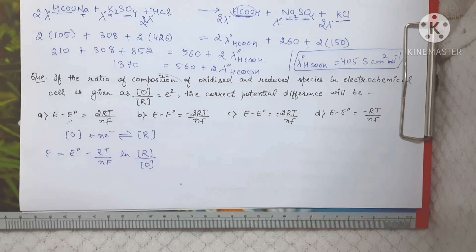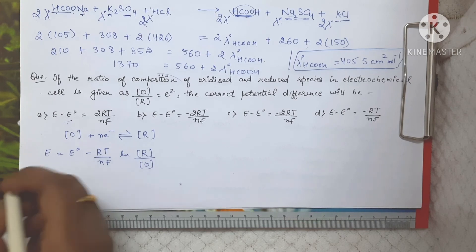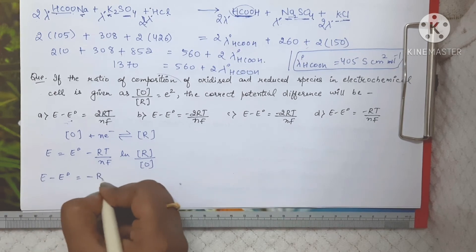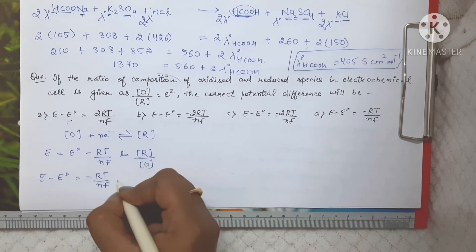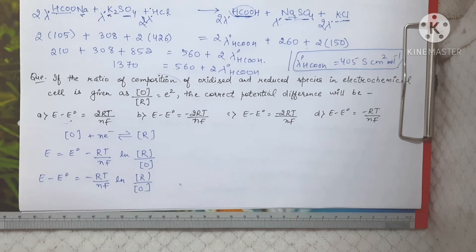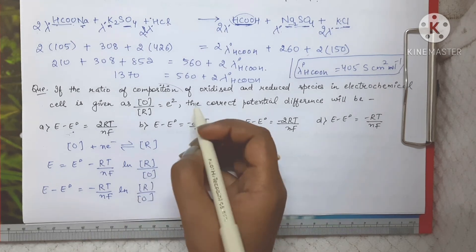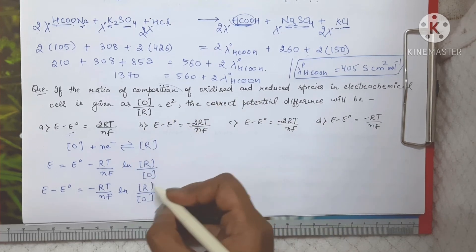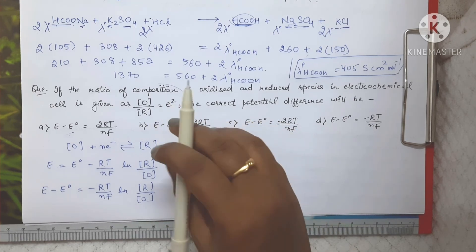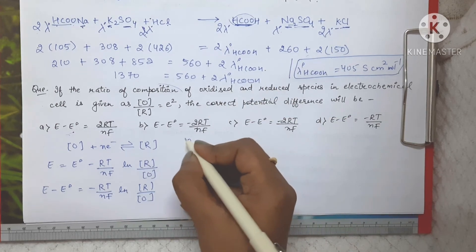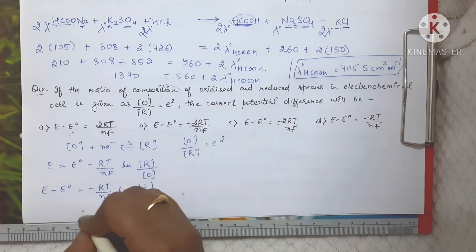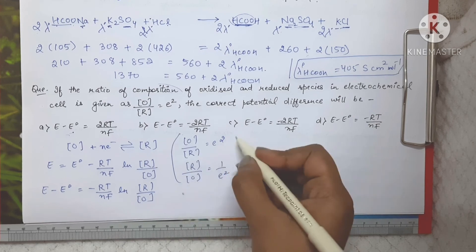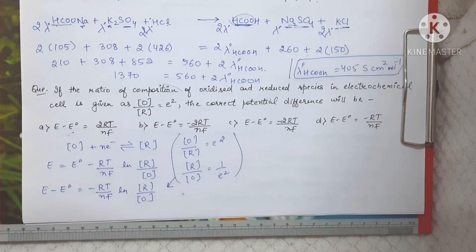From the Nernst equation, taking E° to the left hand side: E − E° = −(RT/nF) ln([R]/[O]). The question gives [O]/[R] = e², so taking the reciprocal of both sides gives [R]/[O] = 1/e². Substituting this value: E − E° = −(RT/nF) ln(1/e²).